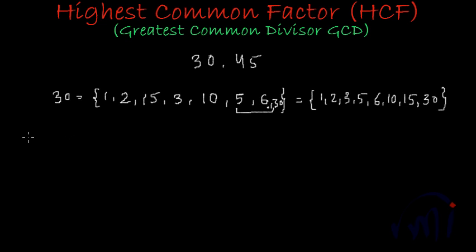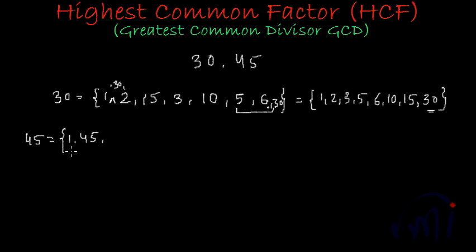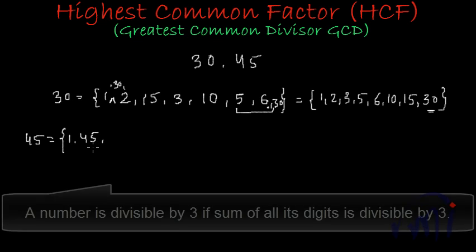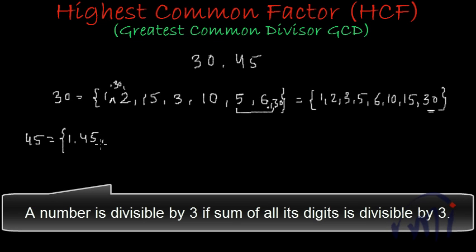Now if I talk about all the possible factors of 45: 1 is a factor of all numbers, and 45 itself will also be a factor of 45. Let's check divisibility by 2 — 45 is an odd number, so it will not be divisible by 2. So 2 will not be a factor of 45. Let's check with 3: 4 plus 5 is 9, and 9 is divisible by 3, so 3 will be a factor of 45.